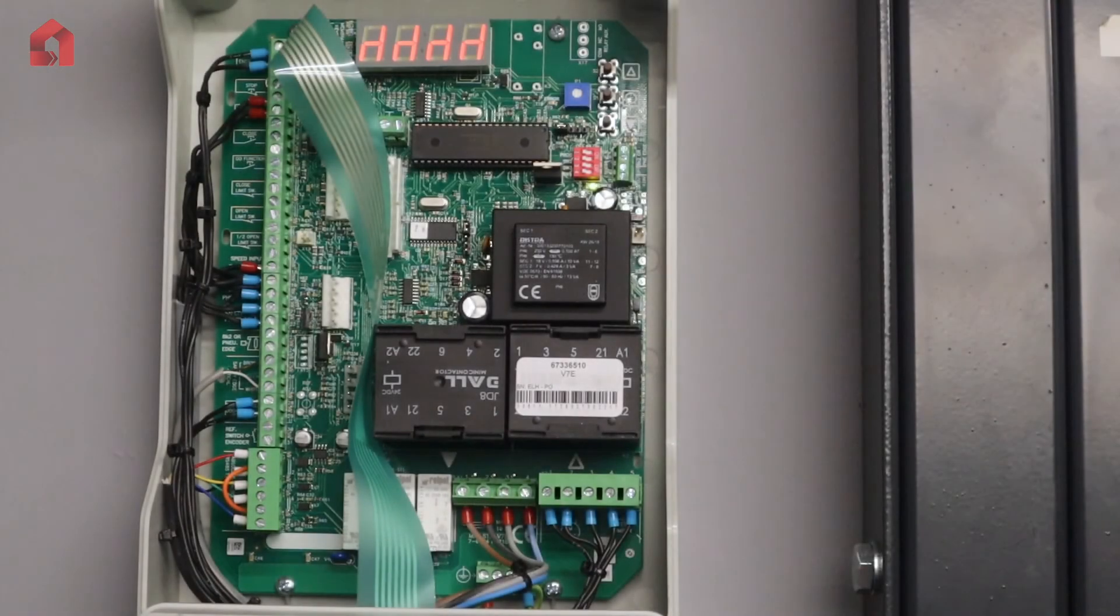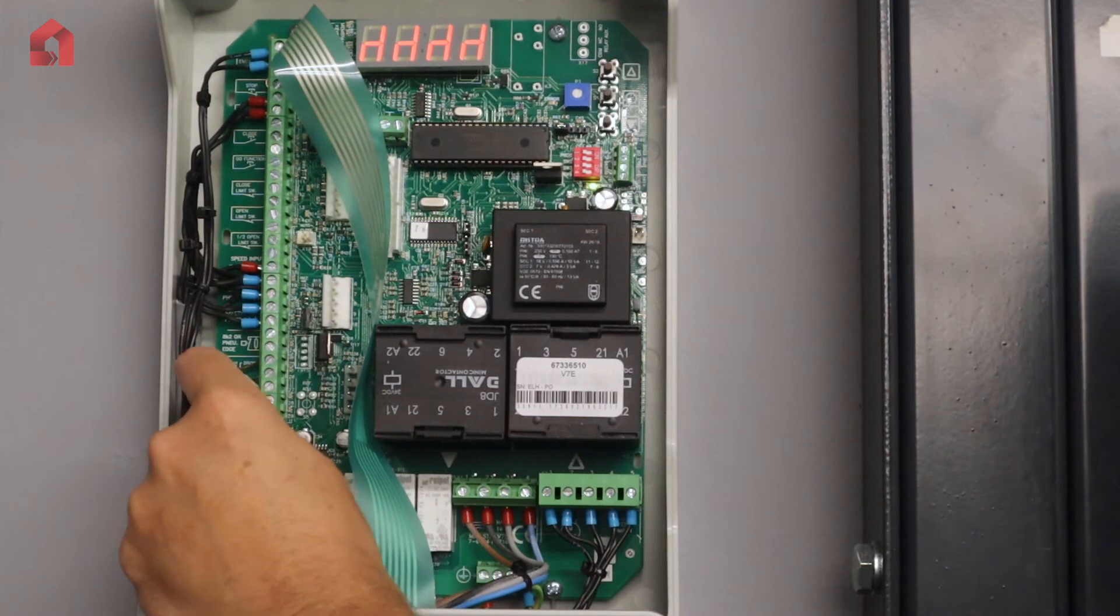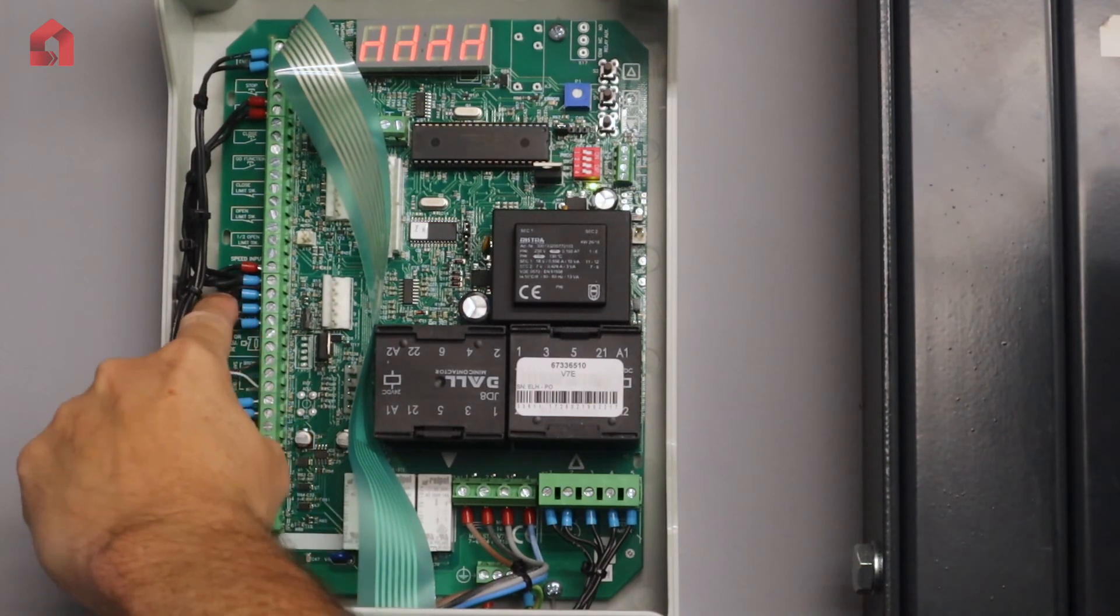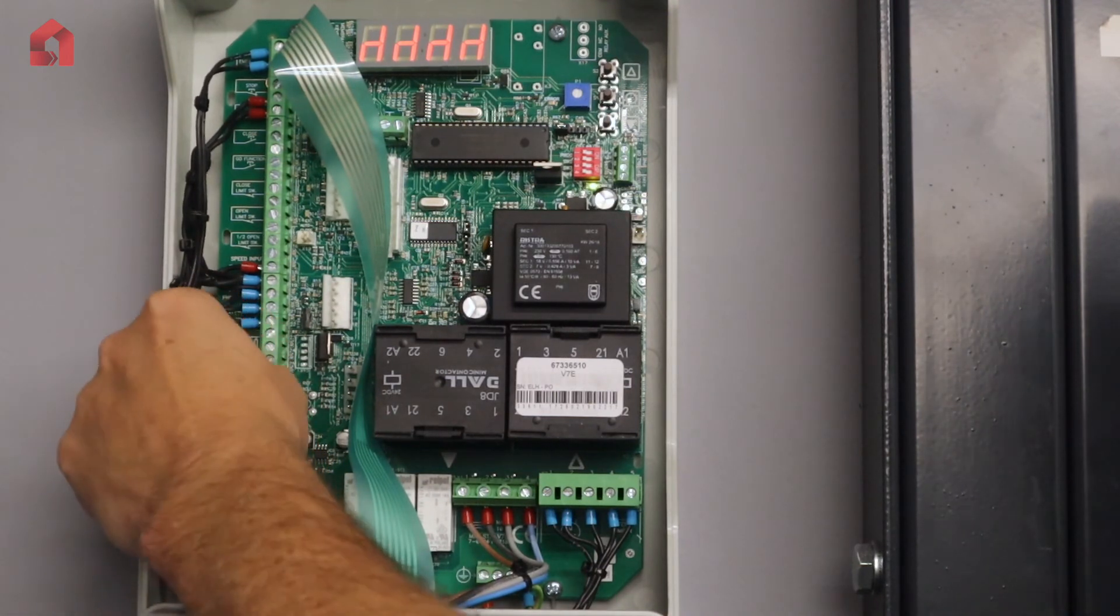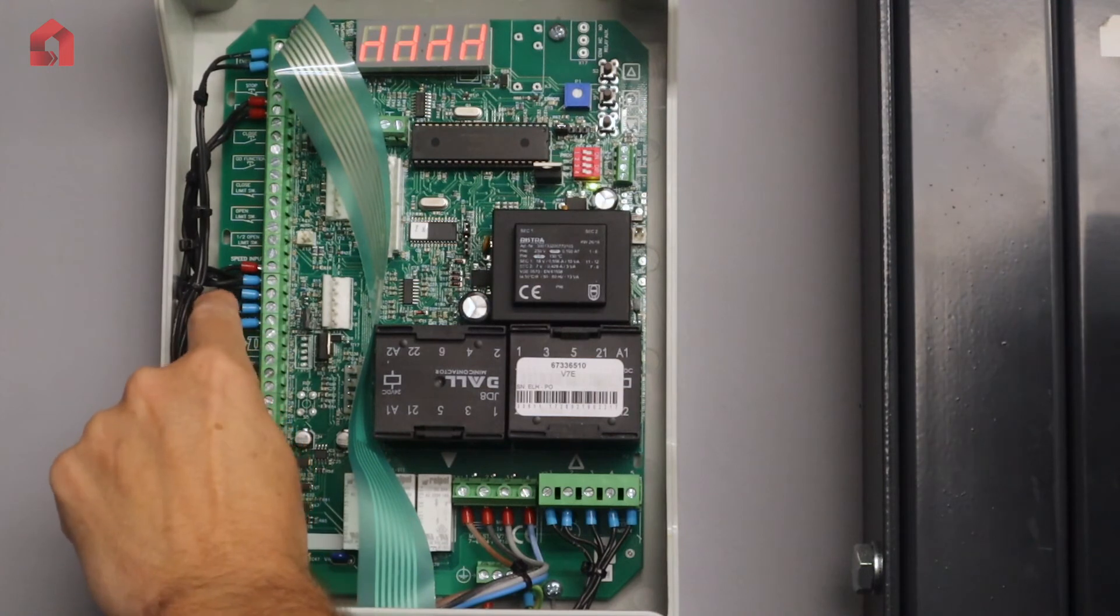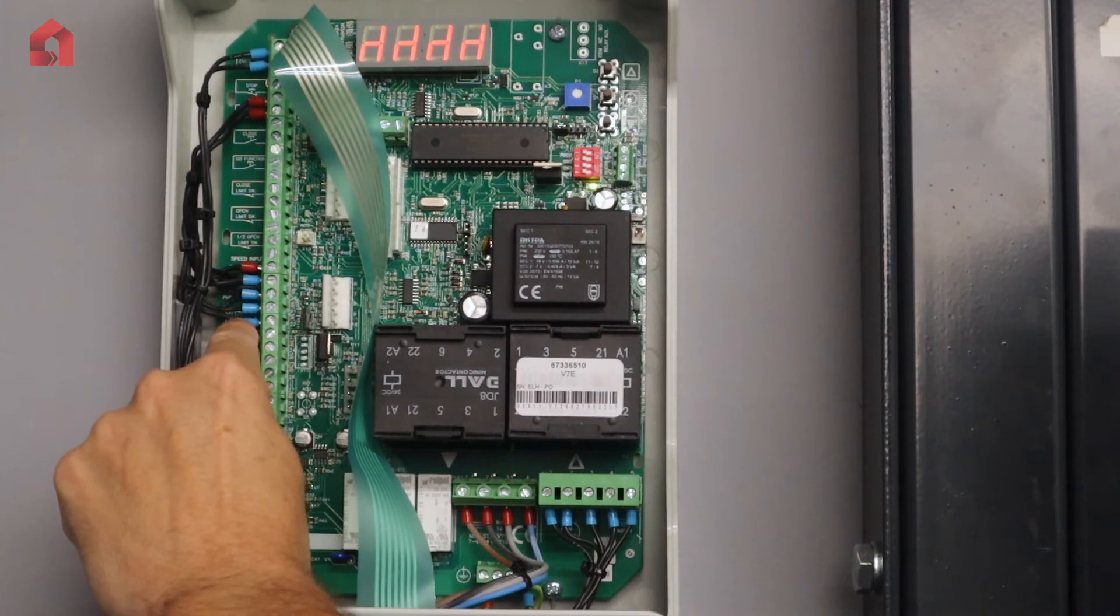So with the V7E on the car park applications, there is usually a photo cell and a safety edge connection as minimum. So 19, 20, 21, and 22 for your photo cell connections - so 19 is your negative, 20 is your positive, 21 and 22 is your normally closed contact.